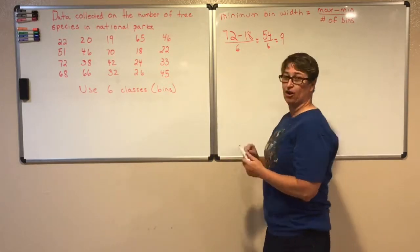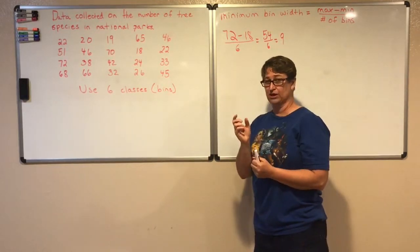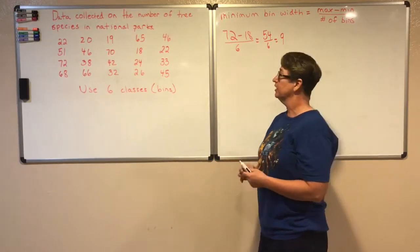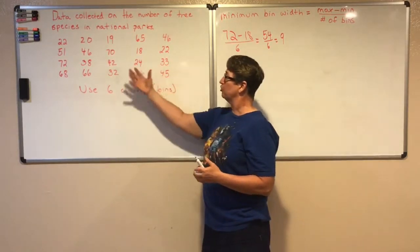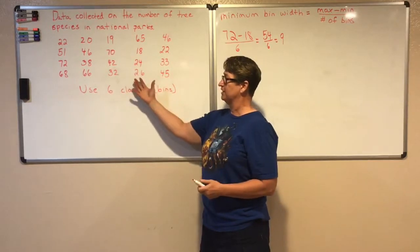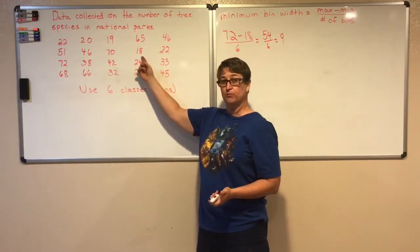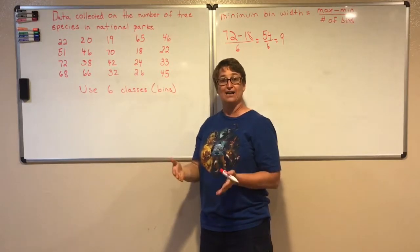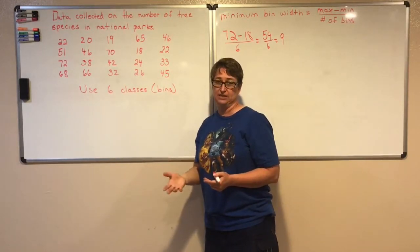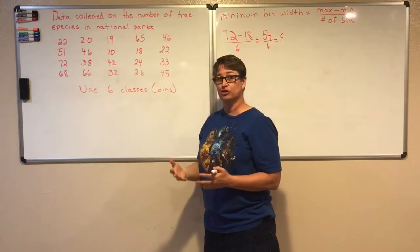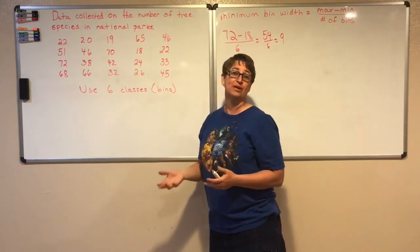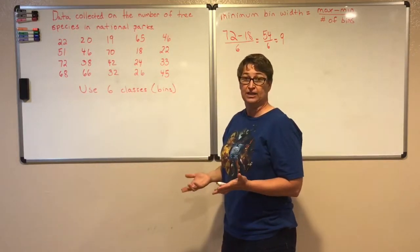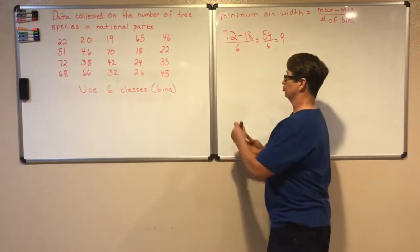Now that we've decided on how wide our bins are going to be we need to decide where we're going to start. We look at our data set and say well my minimum number there is 18. So I need to make sure that my first class includes that number 18. And I'm looking to see what's a nice round number to begin with that's close to 18. And 15 fits that description.